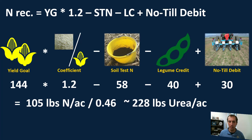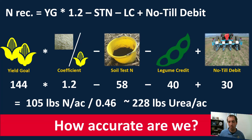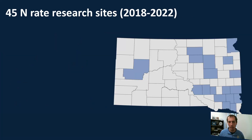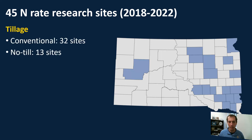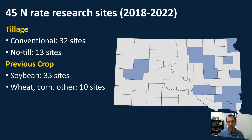So the next question is: how accurate are we? To find out, we looked at different research sites and locations on farmers' fields throughout South Dakota. The highlighted counties shown in dark blue are where we conducted nitrogen trials — 45 sites total since 2018. Of those, 32 were conventional till and 13 were no-till. Thirty-five sites had soybeans as the previous crop, mostly in a soybean-corn rotation, and 10 sites had wheat, corn, or another crop preceding the corn.